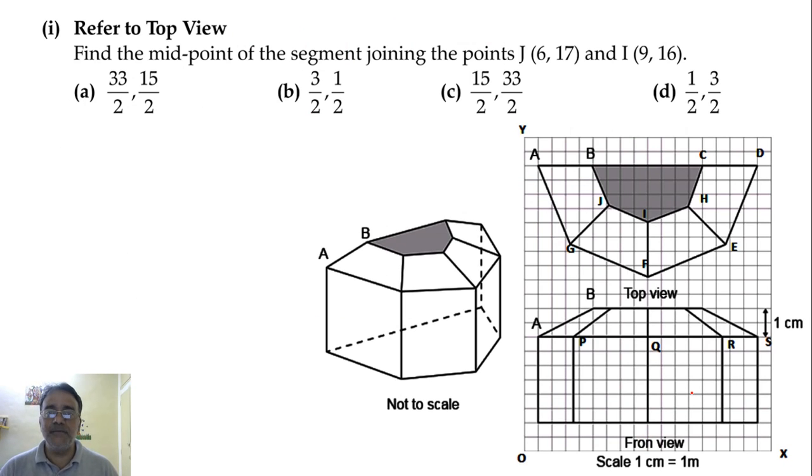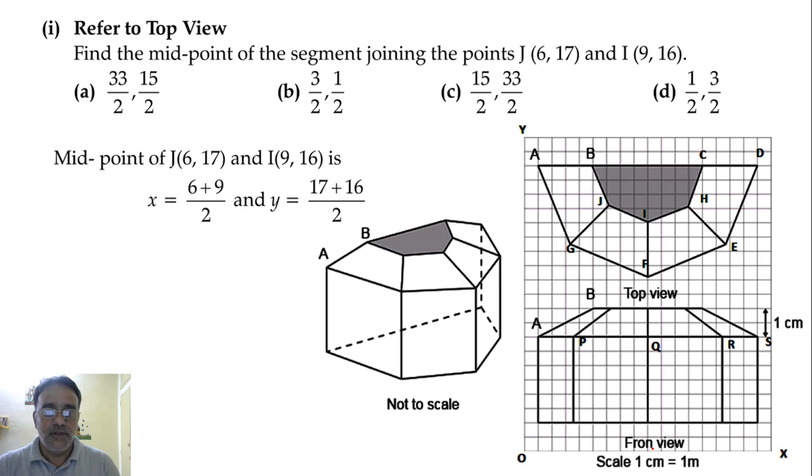Refer to the top view. Find the midpoint of the segment joining the point J(6, 17) and I(9, 16). So the coordinates are directly given in the question. The midpoint formula that we know is (x1 + x2)/2 and (y1 + y2)/2. So (6 + 9)/2 and (17 + 16)/2. This will give 15/2 and this will give 33/2. So the correct option is the third one, option C: 15/2, 33/2.